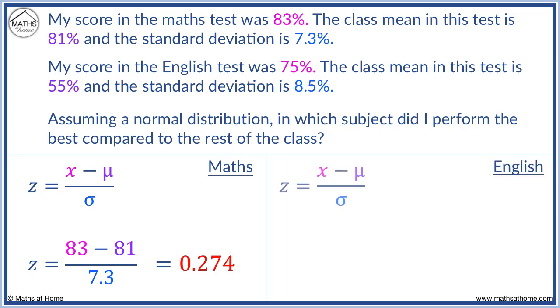For English, my score of 75% is x, the mean is 55% and sigma is 8.5%. The z-score for English is 2.35.